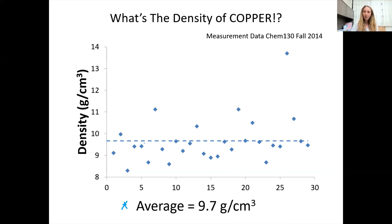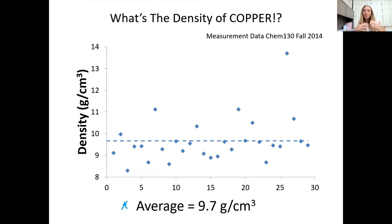You can see there are a lot of points below that average, and some way up high that kind of pull the average up. There are about four or five measurements right on that 9.7 g/cm³ line. The average gives us an idea of where most of the data points lie and how they are distributed.